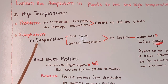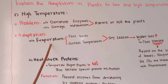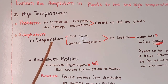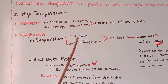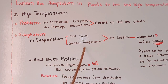The first adaptation is evaporation. Evaporation is the loss of water through the body surface of the plant. This cools the plant body and ultimately controls the temperature of the plant.